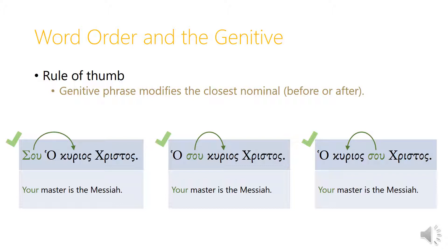Ha kurios su Christos is technically ambiguous but not actually misleading. When reading Greek literature and the New Testament, this rule of thumb mostly works, but there are cases where you have to search for a lead nominal that makes sense. Sometimes writers rely on the fact that taking the genitive with anything else in the sentence would produce nonsense. For the most part, the rule of thumb will be helpful.